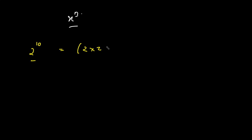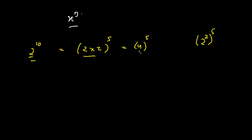Assume you want to find 2 to the power 10. You can write it as 2 times 2 to the power 5 — because 2 squared raised to the power 5 equals 2 to the power 10. At the next step you write it as 4 to the power 5. So our x got multiplied with itself and our power got divided by 2, becoming 5.